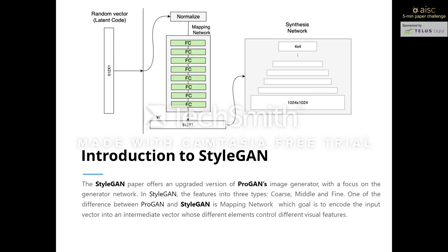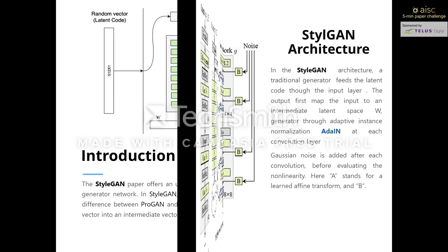StyleGAN was introduced as an upgraded version of PROGAN, with focus only on the generator network. To control the correlation between input features in StyleGAN, the features are divided into three types: coarse features, middle features, and fine features.